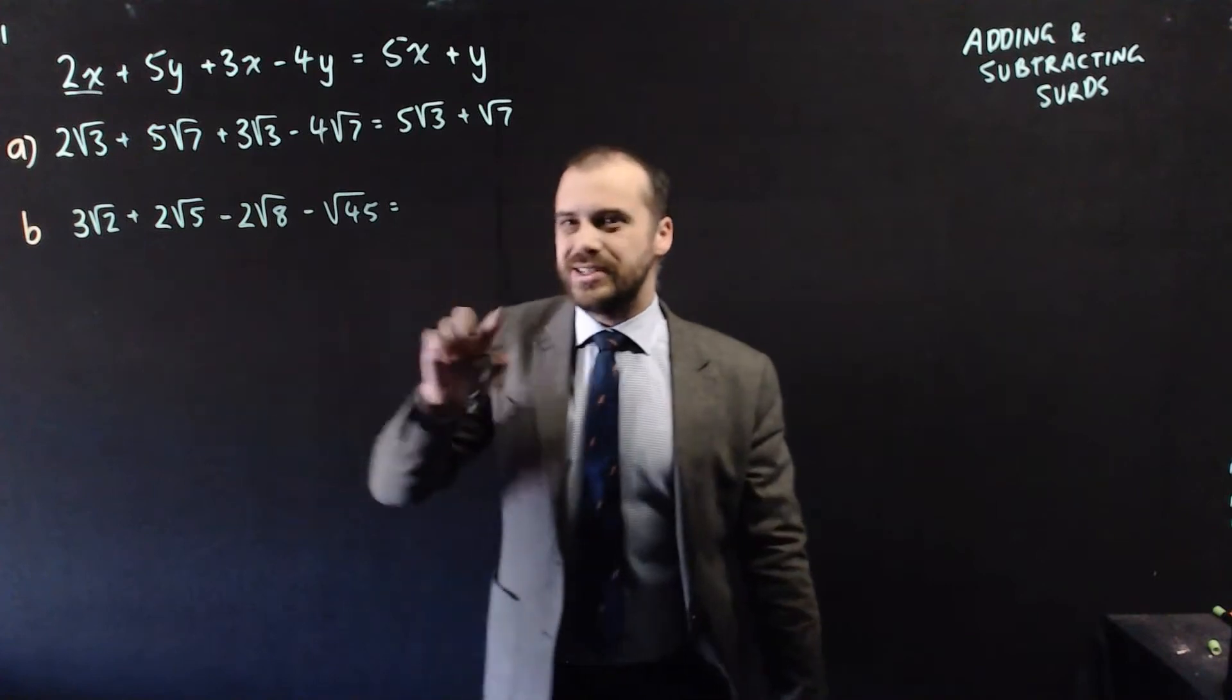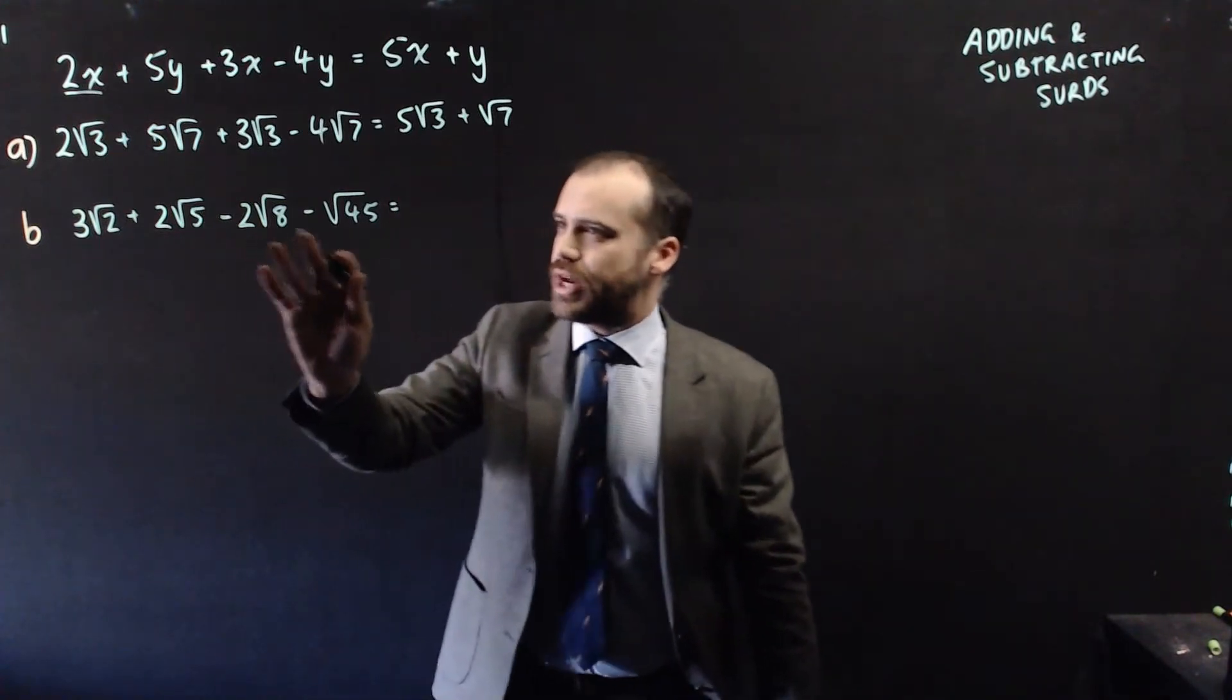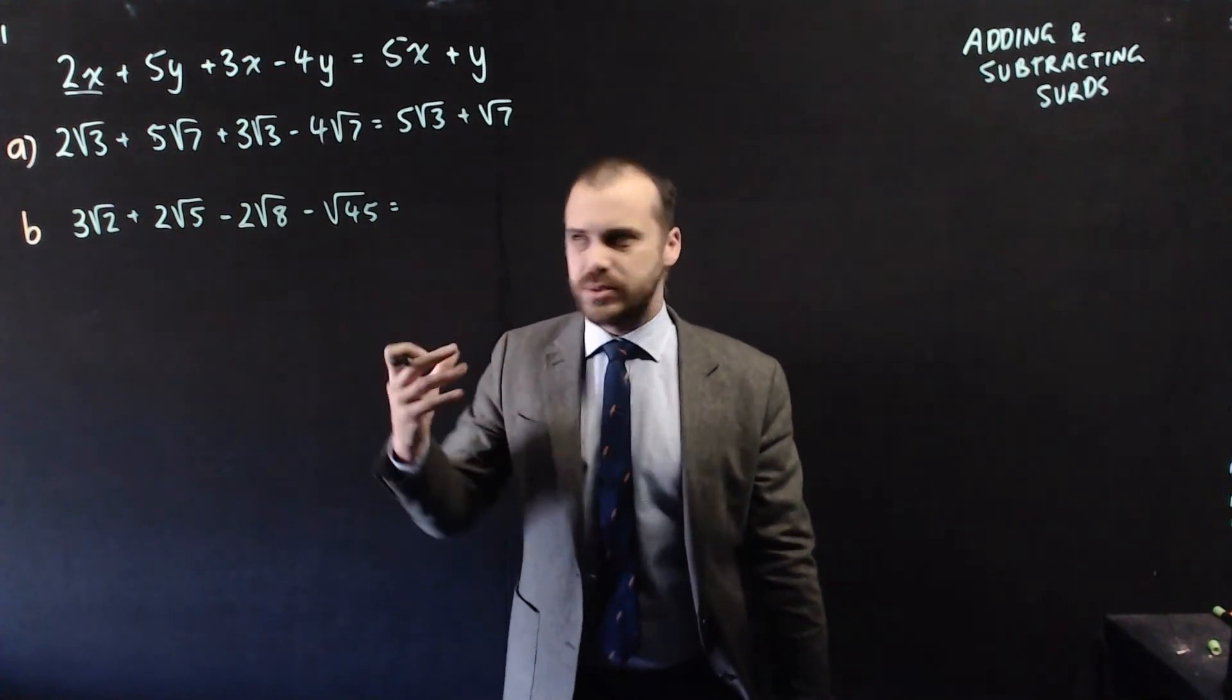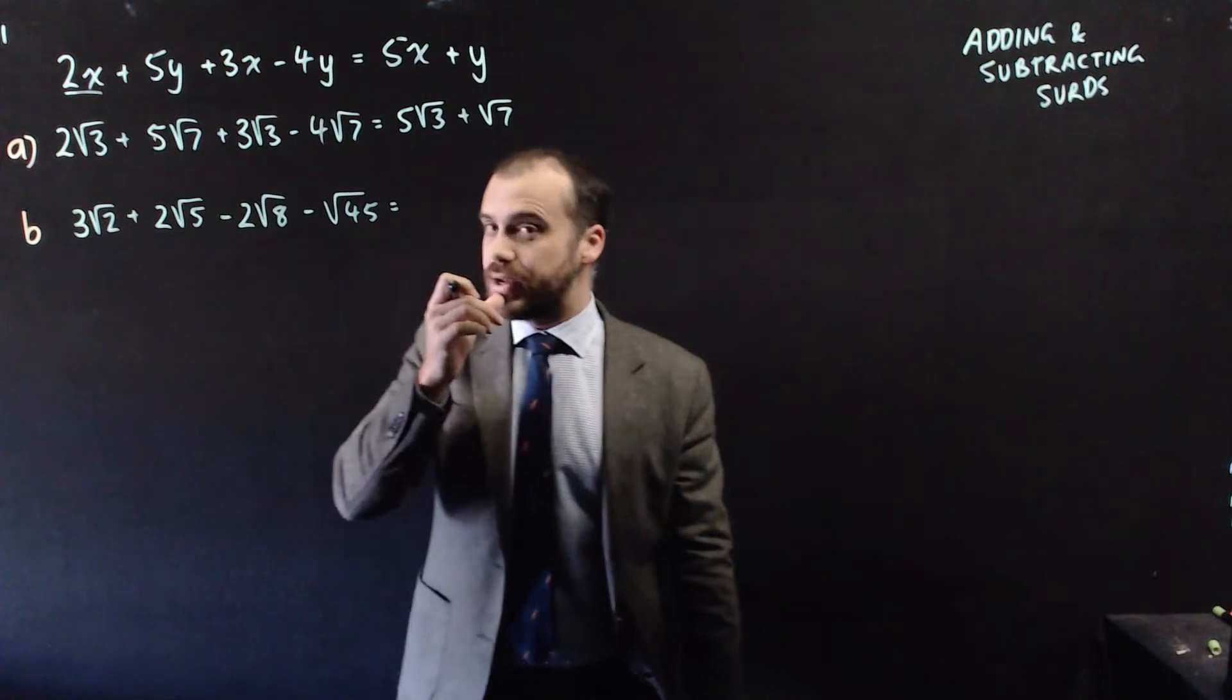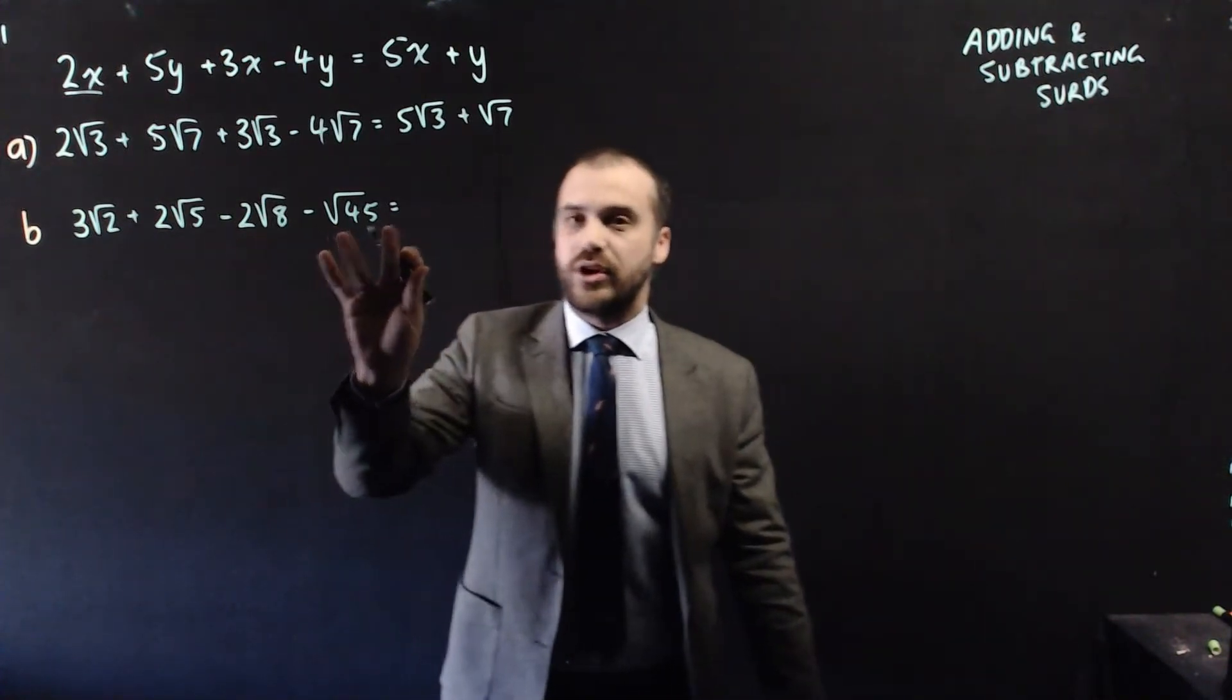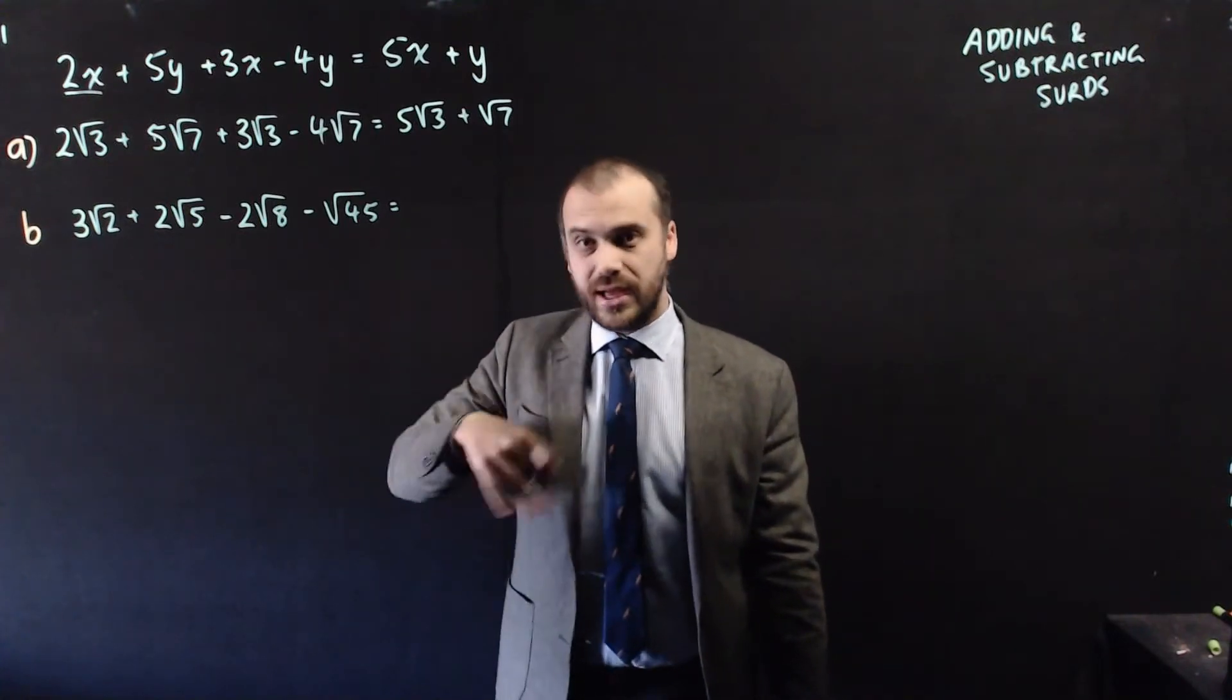This one here is a little bit different because you can see we've got a root 2, a root 5, a root 8 and a root 45. So it feels like we have no common terms. We can't simplify this. But root 8 can be simplified and root 45 can be simplified. And that's the trick here. We simplify and then we add or subtract.